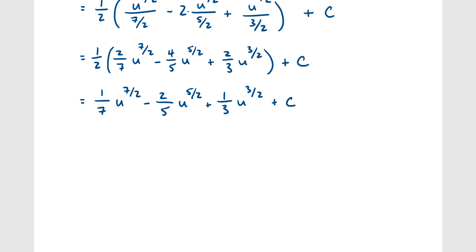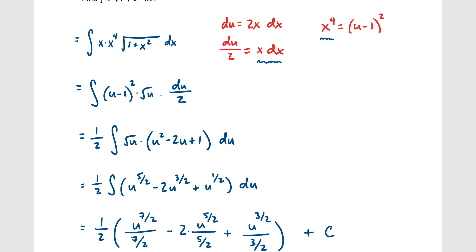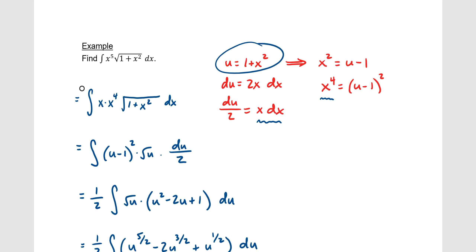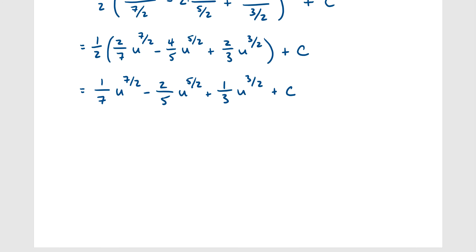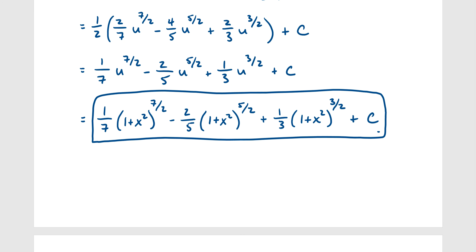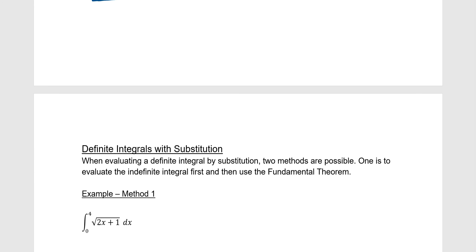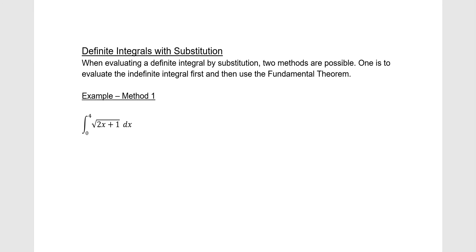Finally, substituting u equals 1 plus x² back in: the answer is 1/7 (1 + x²)^(7/2) minus 2/5 (1 + x²)^(5/2) plus 1/3 (1 + x²)^(3/2) plus c. That completes indefinite integrals using the substitution method.